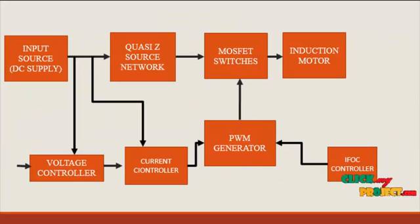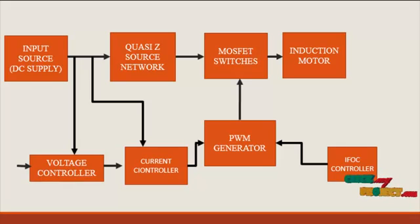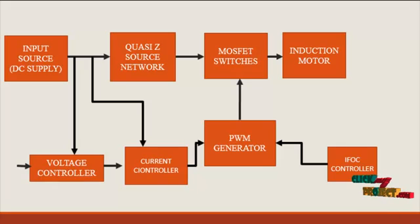Next we see about the flow diagram of our product. In this flow diagram the input source is a DC supply, because the main objective of the flow is the inverter function. Inverter means converting DC to AC supply. The DC supply is fed into the quasi-Z-source network, which is a network having two inductors and two capacitors.